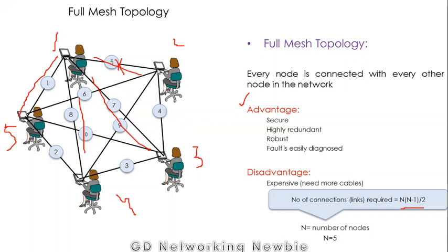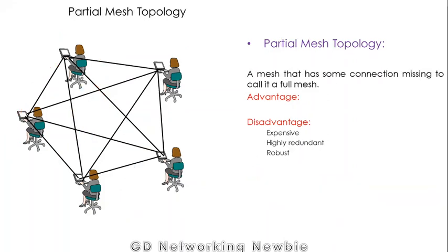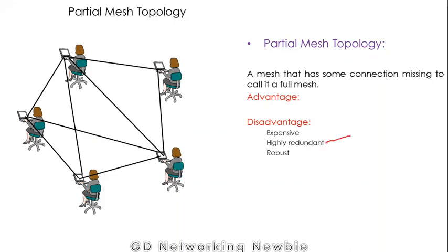In addition to cabling, multiple network adapters are needed to process data from all connected nodes. Then there is partial mesh topology, which is similar to full mesh but with some connections missing — for example, a connection between two particular nodes may be absent. The advantages are the same: it is highly redundant and robust. The cost disadvantage also remains.